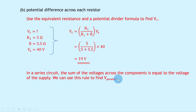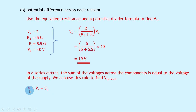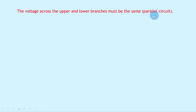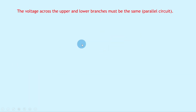Using the series voltage rule, V parallel equals VS minus V1, so 40 minus 19 gives 21 volts across the parallel combination. Since the branches are in parallel, the voltage across each branch is the same — so V4 equals 21 volts for the lower branch resistor.